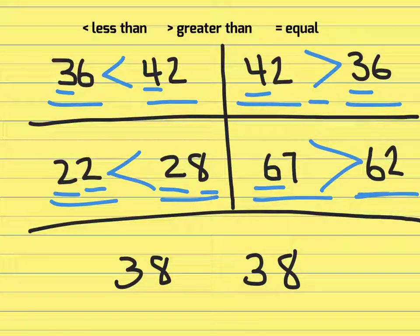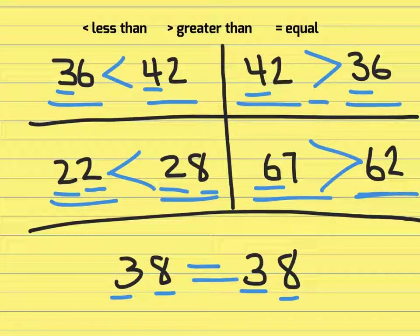In the last set of numbers we have three tens, three tens, eight ones, eight ones. Students look at that and they realize that 38 is equal to 38.